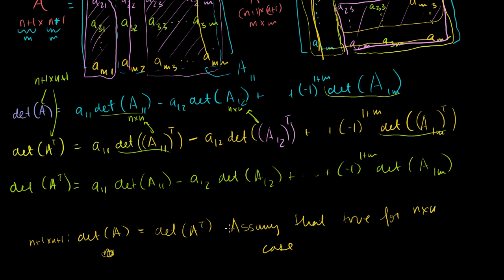And then we're done. We've now proved that this is true in general. We proved the base case for the 2×2, and then we showed that if it's true for the n case, it's true for the n+1 case — so if it's true for 2×2, it's true for 3×3, and so on. The takeaway is pretty neat: you can take the transpose and the determinant doesn't change.